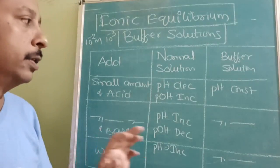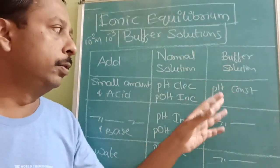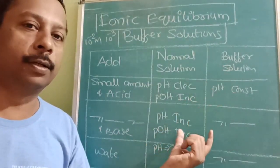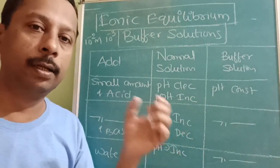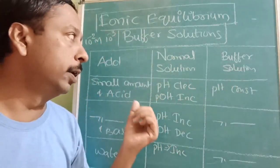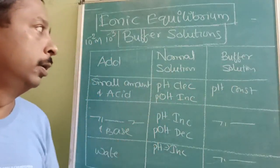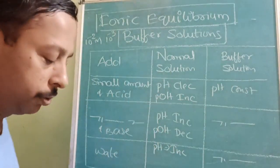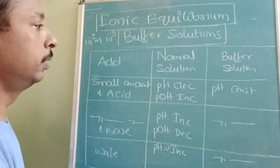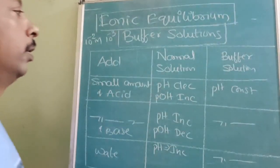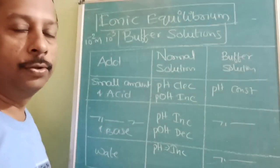That is the difference between the normal solution and buffer solution. Now I will tell you about the characteristics of buffer solution, then we will go for the types of buffer, then we will go for the buffer capacity.